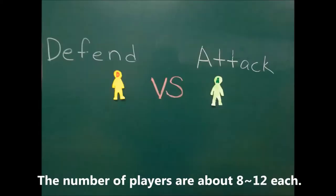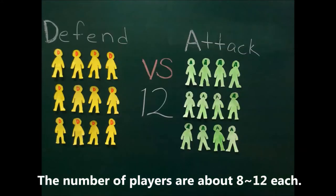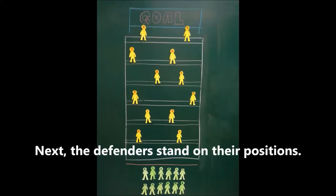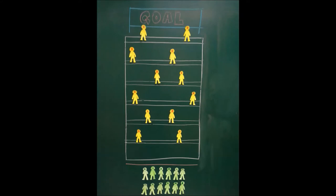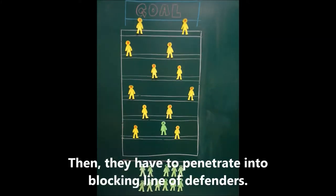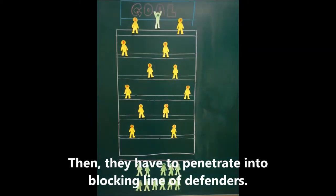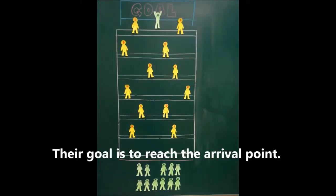The number of players is about 8 to 12 each. The attacking team first stands on the starting line. Next, the defenders stand on their positions. Then, they have to penetrate into the blocking line of defenders. Their goal is to reach the arrival point.